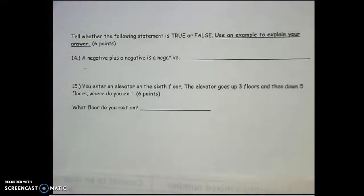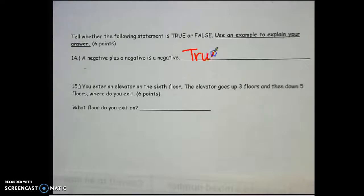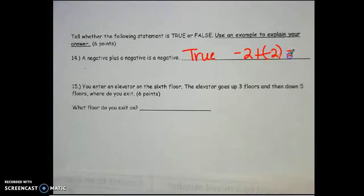Tell whether the following statement is true or false, and use an example to explain your answer. A negative plus a negative is a negative — that is true, because if they have the same sign, you add them and keep your sign. So negative 2 plus negative 2 is negative 4.